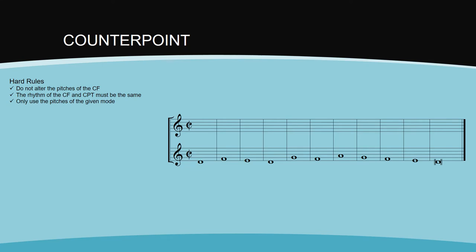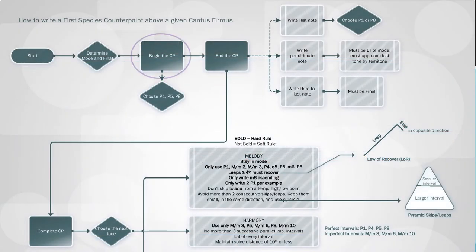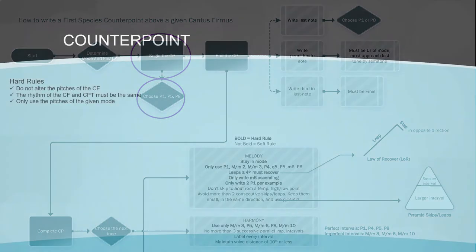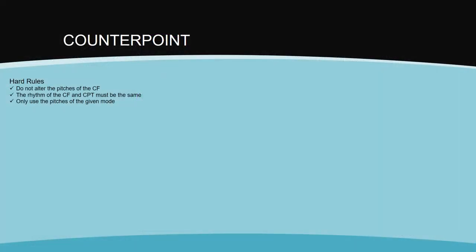Now we can begin the counterpoint. A hard rule is that the counterpoint must begin on a perfect unison, perfect fifth, or perfect octave above the first cantus firmus tone. This gives us three possible options. I liken the act of writing counterpoint to a type of choose your own adventure. You have several options, but not all of them will lead you to the correct and happy ending.